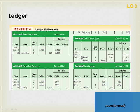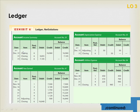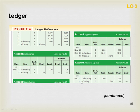When posting the closing entries, we write the date, write 'closing,' reference the journal page, do the journal entry, and then bring the account to a new balance. Temporary accounts will have a zero balance. Income summary was credited for $16,960 representing revenues, debited for $9,855 representing expenses, bringing the total to $7,105. Then we closed income summary to capital, bringing it to a zero balance. All accounts that close are brought to a zero balance.